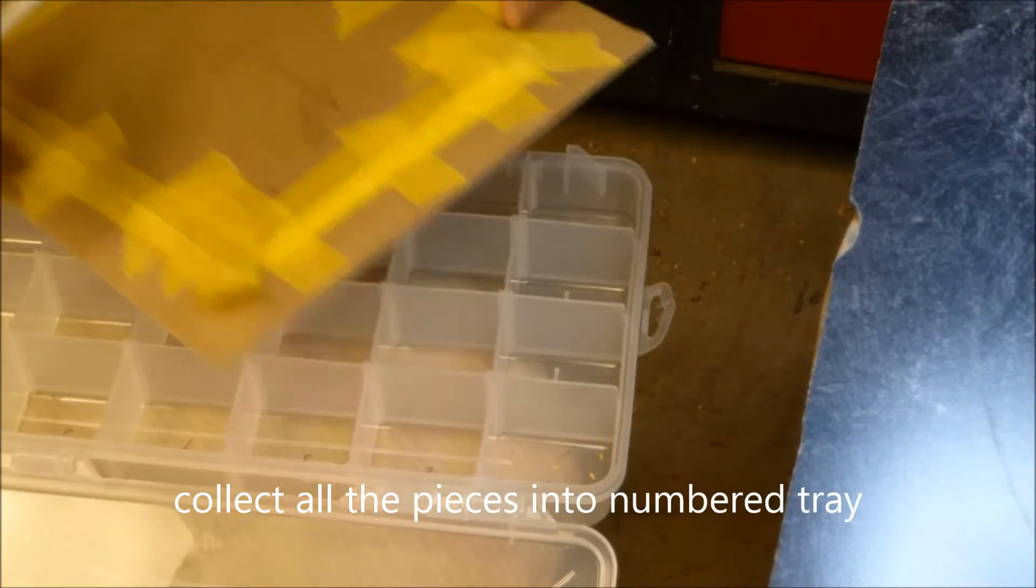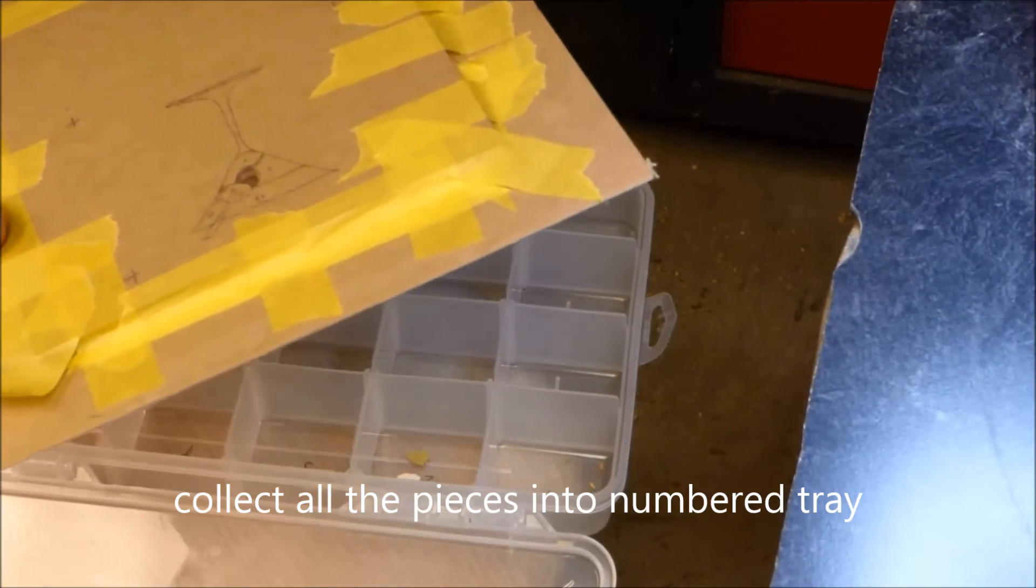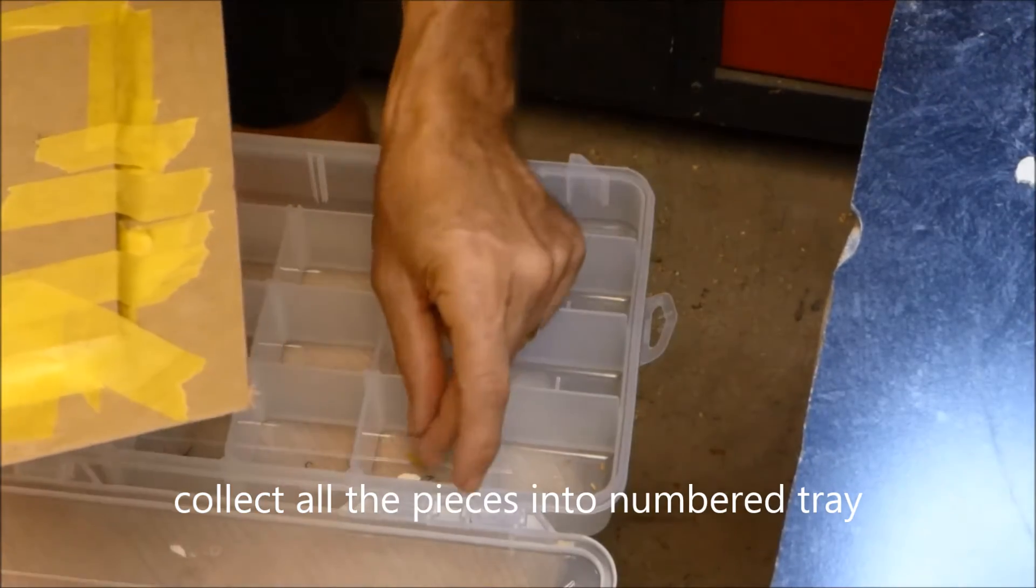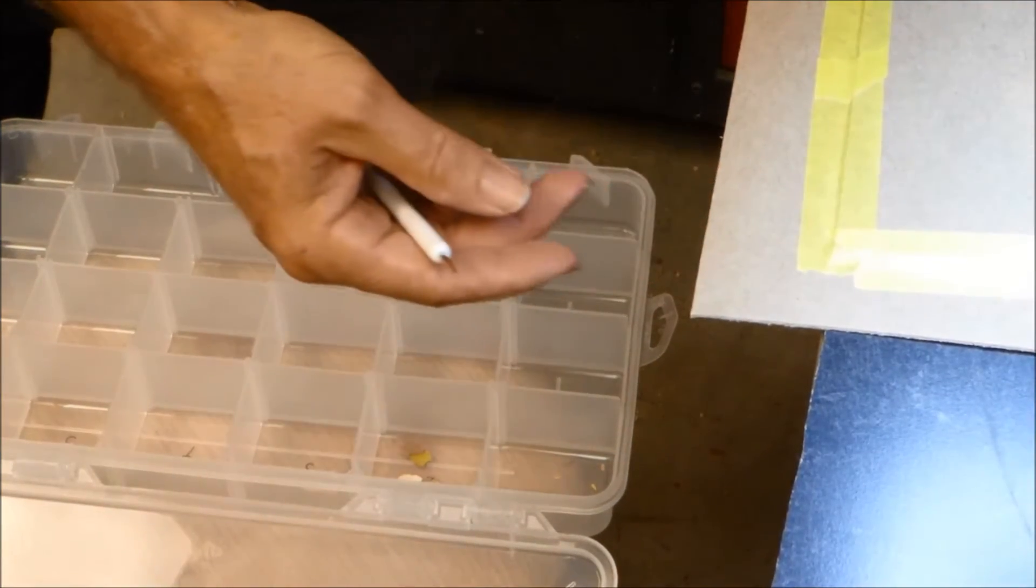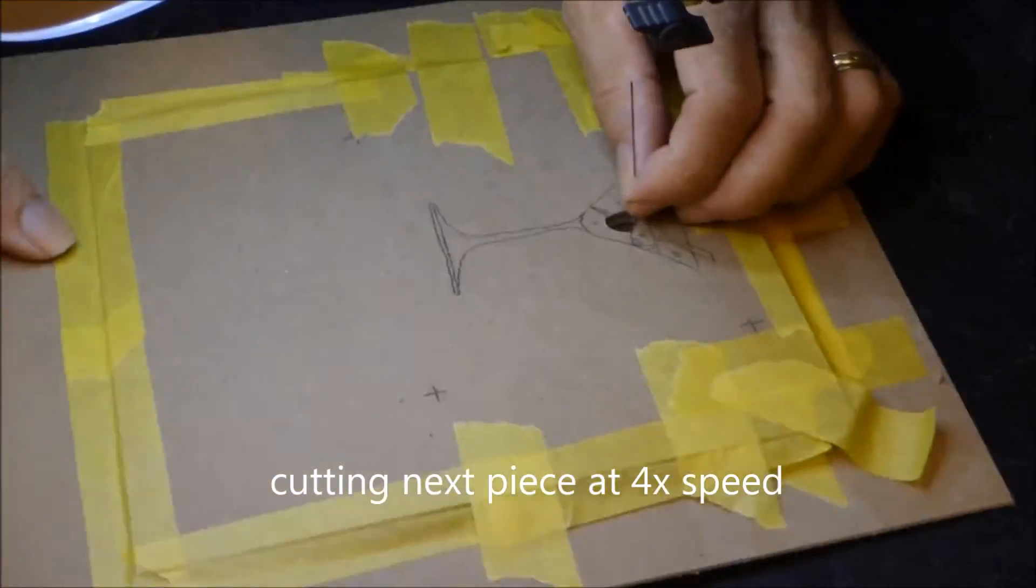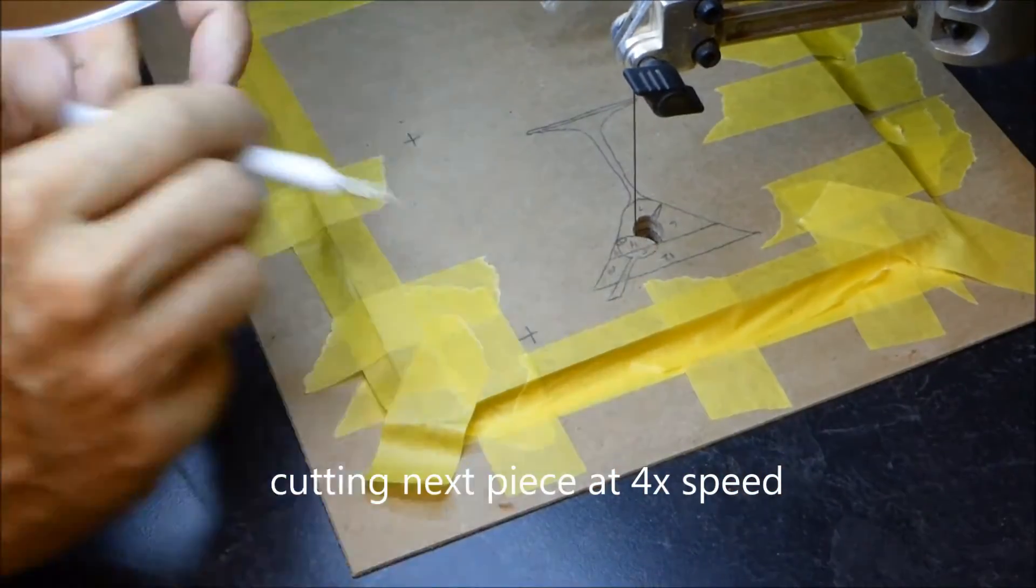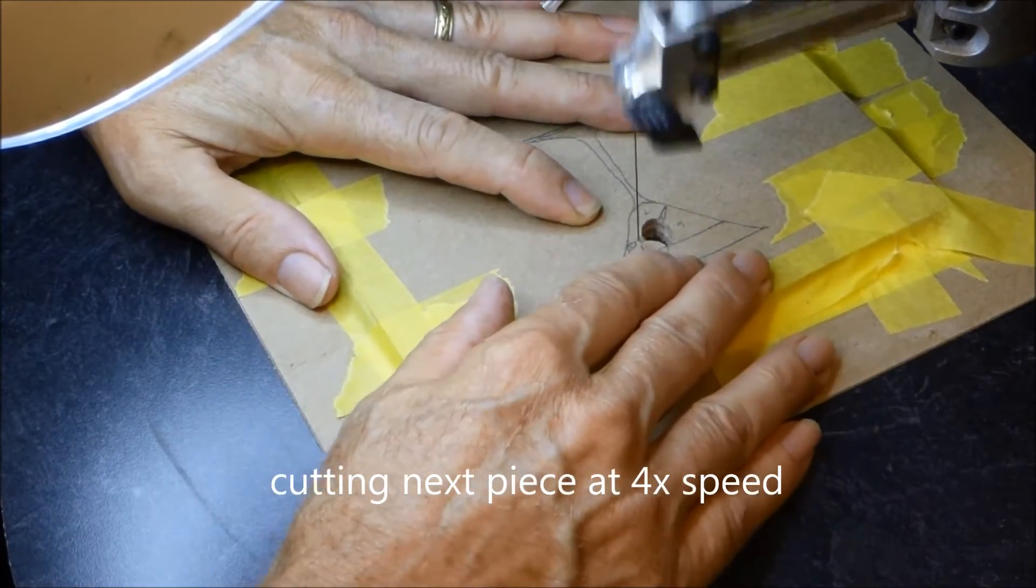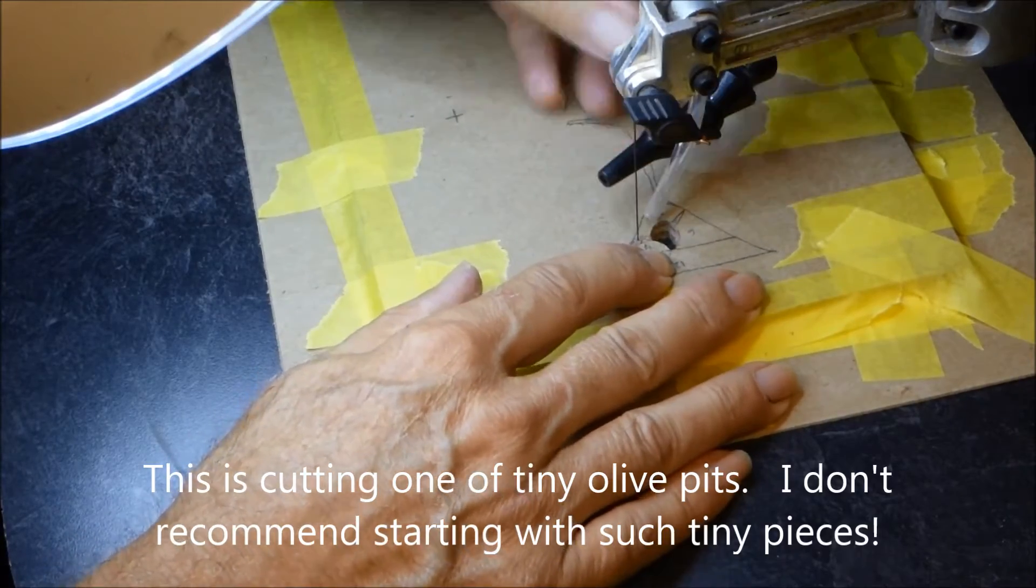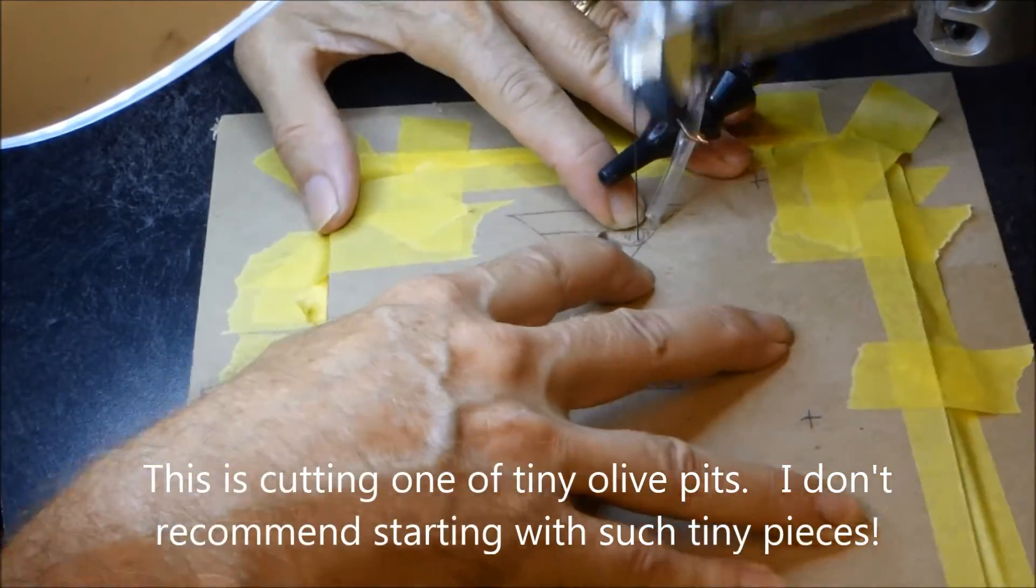Then we have a little parts box and we'll collect each one of the parts in a little divider area and we'll, one by one, when we're all done, we'll have them all there. It's important to have something like this to keep it organized or you'll have a mess. Now we're going to cut a few more pieces just to show you and I've sped up the video here. This time I'm cutting one of the little olive pits. So this is a really tiny piece which I do not recommend trying to cut the first time. It's like one of the smallest pieces I've ever cut. It worked, but it's sort of a pain.